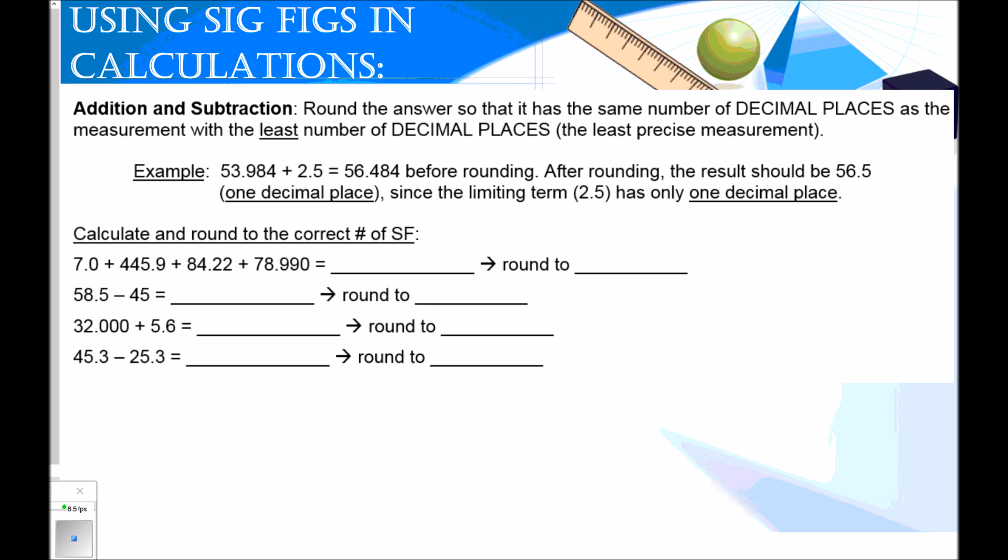So addition and subtraction. You're going to round your answer so that it has the same number of decimal places as the measurement with the least number of decimal places, so your least precise measurement. When you're adding and subtracting, it's really important for you to realize you're going to look at decimal places in your number.